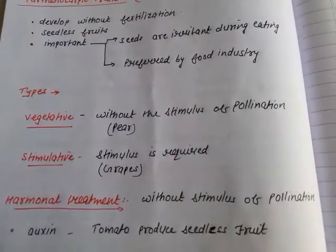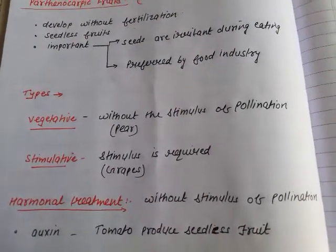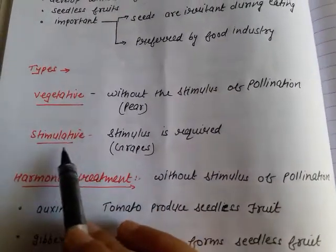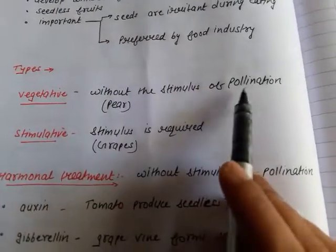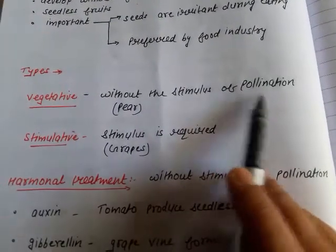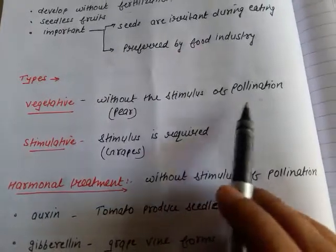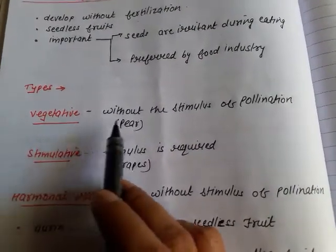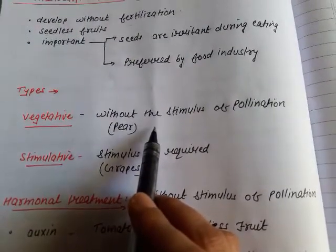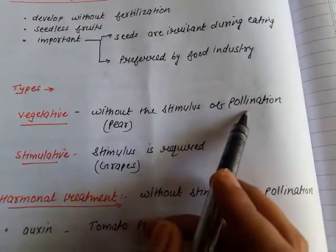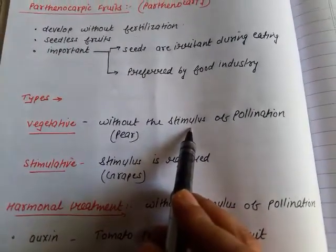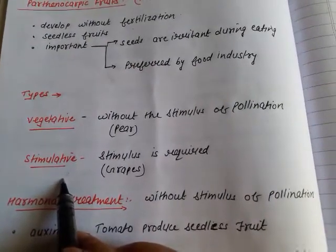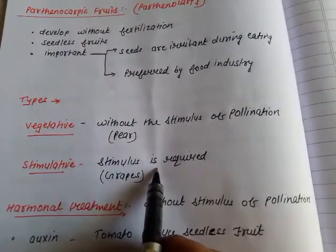Next are the types of parthenocarpy: vegetative parthenocarpy and stimulative parthenocarpy. As the name indicates, stimulative means when a stimulus is required, and that stimulus is pollination. In the case of vegetative parthenocarpy, the seedless fruits can develop even without the stimulus of pollination — pollination is not needed at all. Example: pear. In stimulative parthenocarpy, the stimulus of pollination is required.